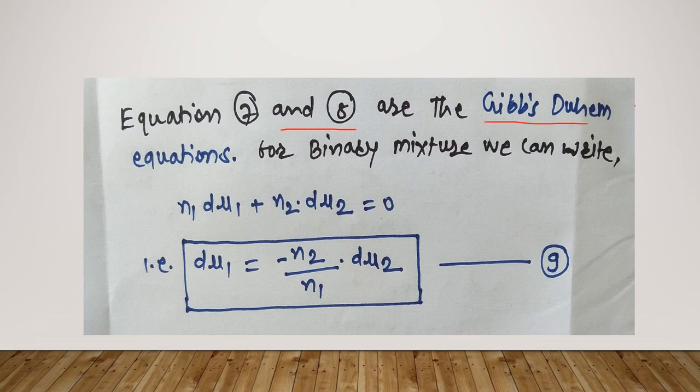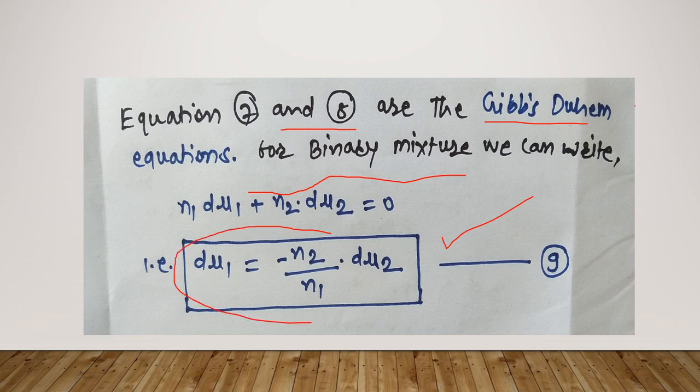Now, if we consider a binary mixture, for a binary mixture we can write N1·dμ1 + N2·dμ2 = 0. Then dμ1 = −(N2/N1)·dμ2. This is also known as the Gibbs-Duhem equation.